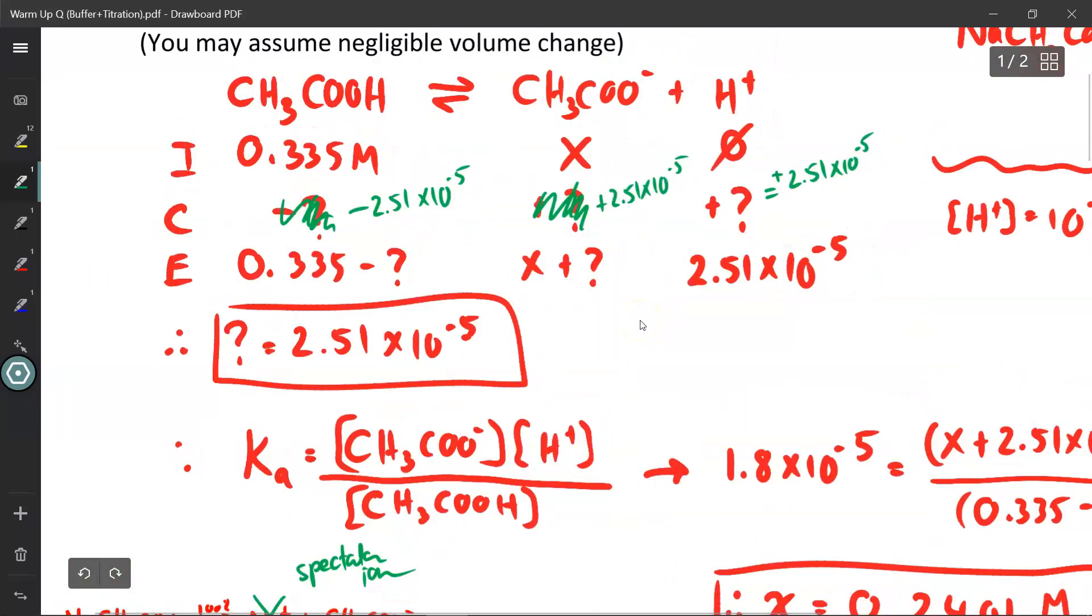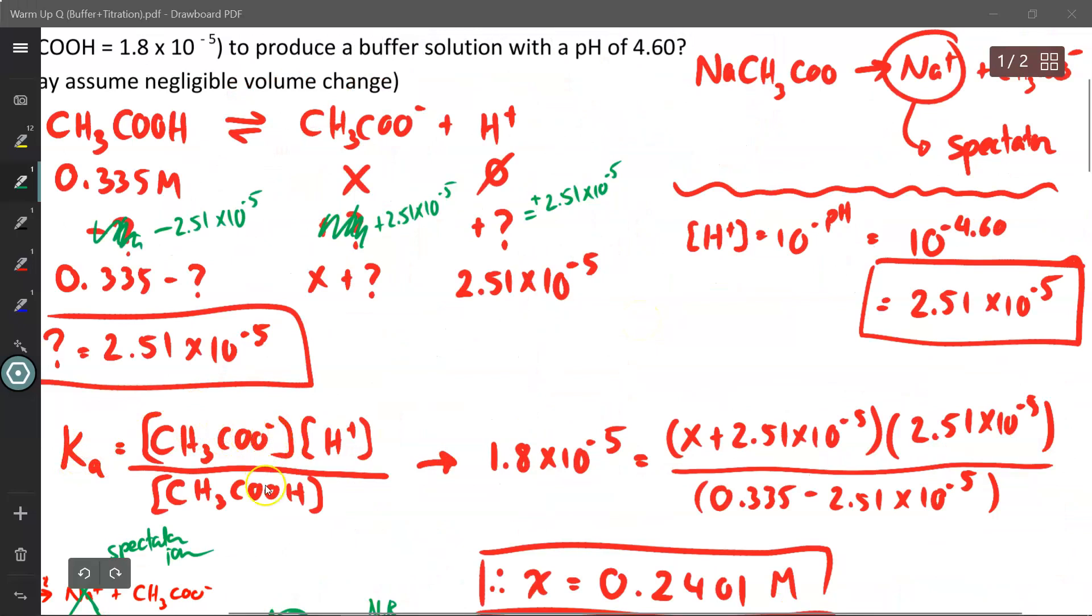I can then write out the equilibrium expression where Ka equals the ionized divided by the unionized component, or products over reactants. So there's my acetate ion, H plus ion over acetic acid. My final value is X plus 2.51 times 10 to the power of negative 5, the actual value 2.51 times 10 to the power of negative 5 for the concentration of H plus, and at the bottom 0.335 minus 2.51 times 10 to the power of negative 5. Solve for X and you get a value of 0.2401 moles per liter for X. So now I know the concentration of my acetate ion.